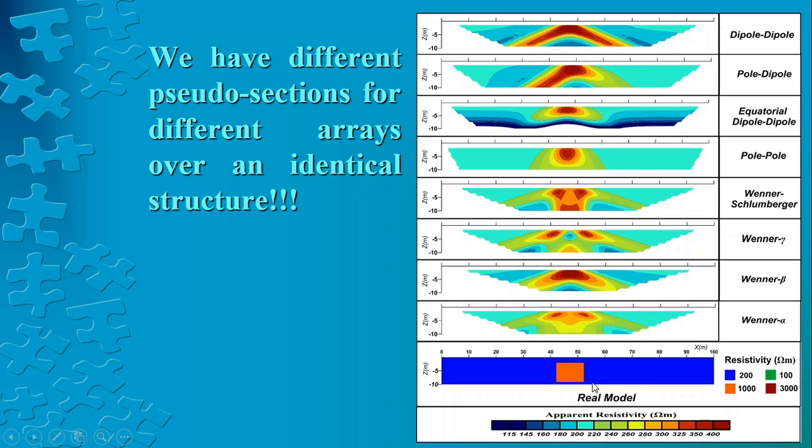The shape of the anomalies are too much different in different arrays and totally different with respect to the real model. I will also insist that the similarity between the structure of this synthetic model with the equatorial dipole-dipole or the pole-pole doesn't guarantee that these arrays are the most effective arrays for analyzing these kinds of targets. We should consider a lot of other parameters.